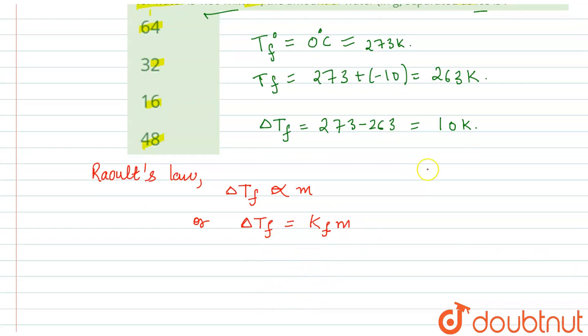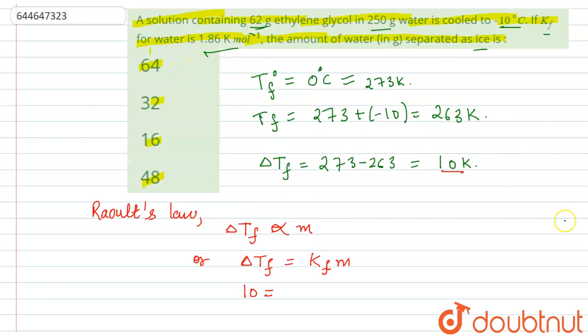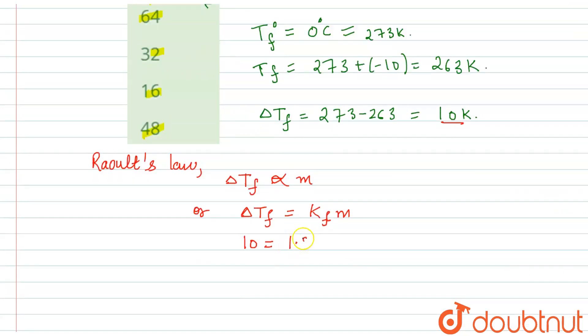Now we have the values here. We have calculated delta Tf, that is 10, equals 1.86 Kelvins per mol, so 1.86 into molality. Molality is basically the number of moles of solute upon volume of solvent in kilograms.